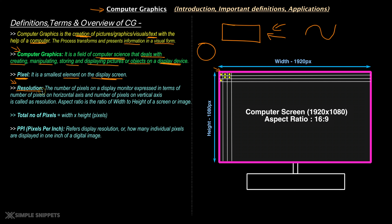The next term you'll come across is resolution. You'll hear this a lot in computer graphics and even in general. If you're watching this video on YouTube, you have different resolutions to select from — 4K, 1080p, 720p. Resolution is basically the number of pixels on a display monitor, expressed in terms of the number of pixels on the horizontal axis and the number of pixels on the vertical axis. This computer screen is 1920 pixels wide and 1080 pixels tall, meaning in one row we can fit 1920 pixels, and in one column we can fit 1080 pixels.